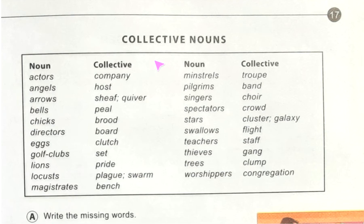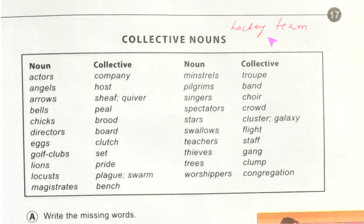For example, take a school's hockey team. If there are 11 players, we think of it as a single team — as one thing. We call it a 'team.' In this case, 'team' is a collective noun. So nouns that stand for a number of things considered as one are called collective nouns. Collective nouns generally take a singular verb.